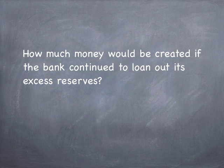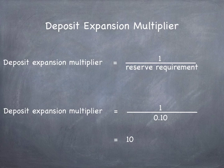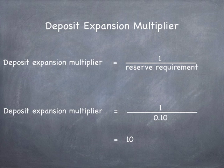How much money would be created if the bank continued to loan out its excess reserves? To find out, we must calculate the deposit expansion multiplier. The deposit expansion multiplier determines how much money can be created in the economy from an initial deposit. The formula is 1 divided by the reserve requirement. If the Federal Reserve set the reserve requirement at 10%, the deposit expansion multiplier would be 1 divided by 0.10, which equals 10.